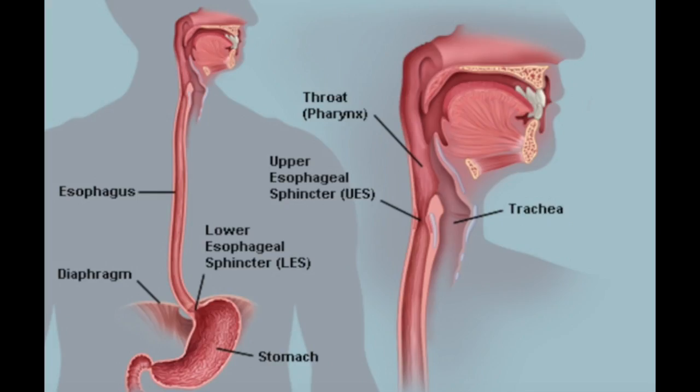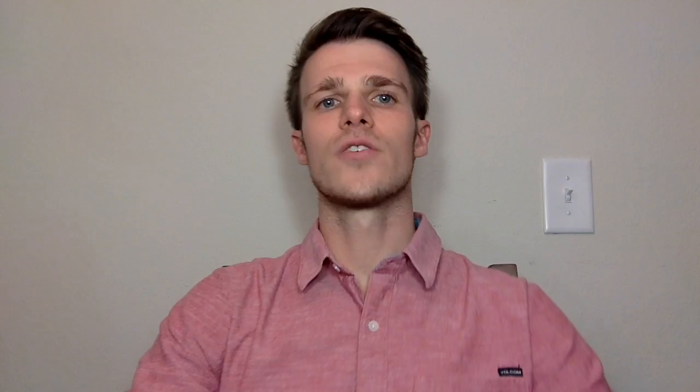Foreign body impactions typically occur at sites of physiologic or pathologic narrowing. The esophagus has three areas of physiologic narrowing: the upper esophageal sphincter, the level of the aortic arch, and the diaphragmatic hiatus. Structural or functional esophageal abnormalities that increase the risk of impaction are most commonly secondary to an esophageal stricture or ring. Other common causes include esophageal tumors, achalasia, esophageal webs, diverticula, hiatal hernias, and eosinophilic esophagitis.